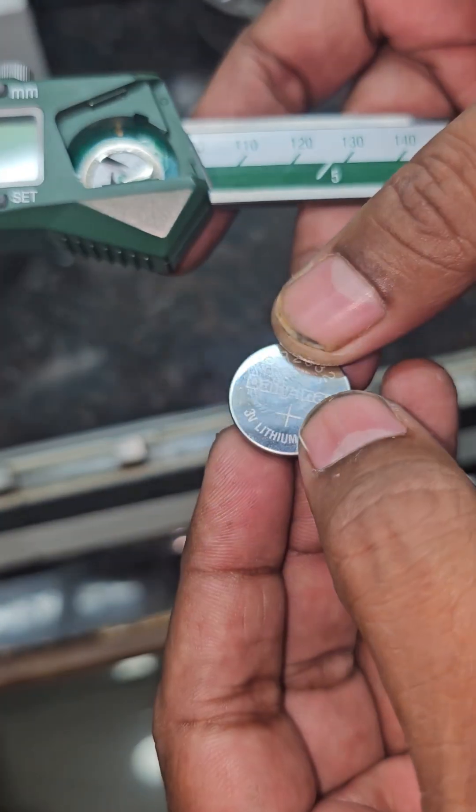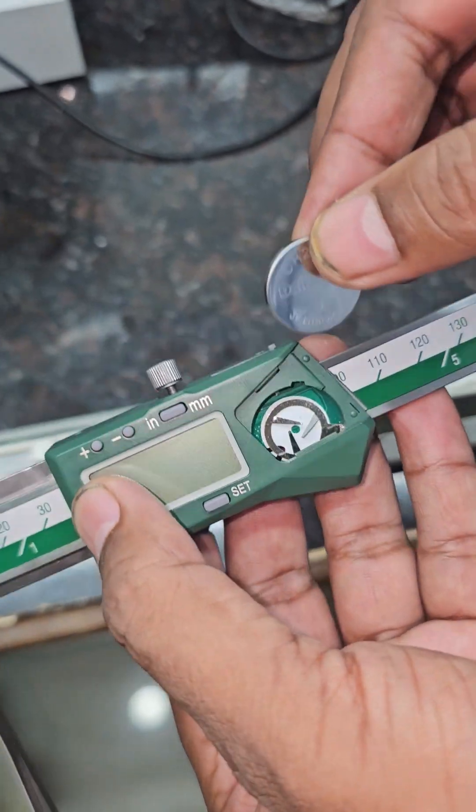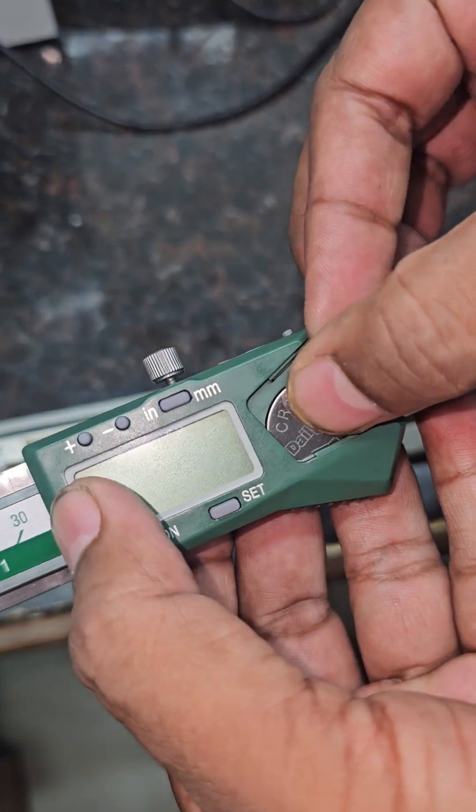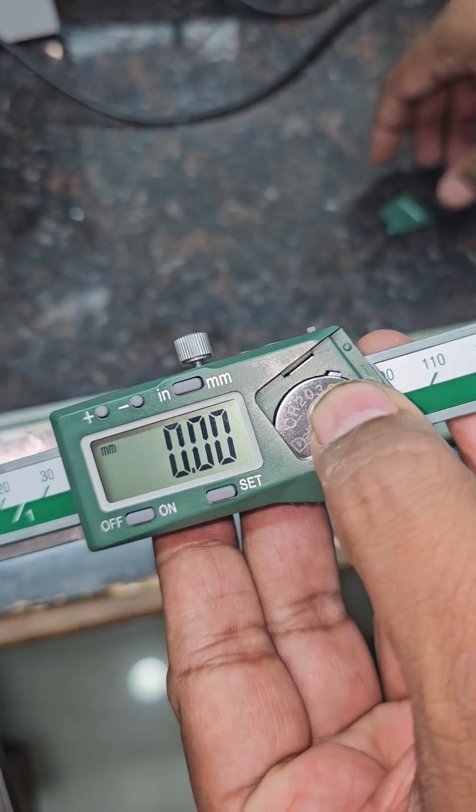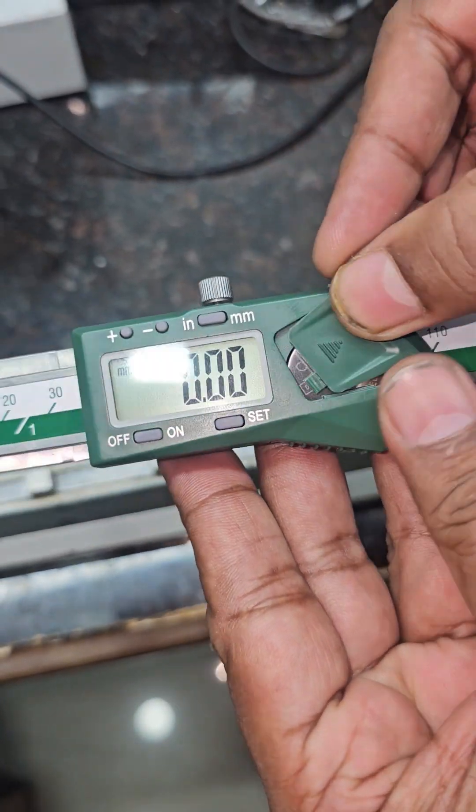3V cell. This is minus side, minus side goes downside. After putting it, zero is coming. Now inserting the battery cover at its position.